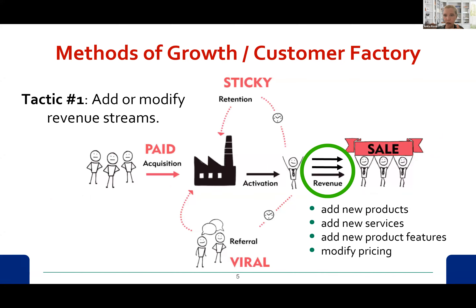We are going to be working on three different case studies, and they all have components of this customer factory. One component would be to add or modify revenue streams. It's really in the revenue section where revenue is coming into the company. After the customer has already found out about your value proposition, what can we do? We can maybe add a new product or service, add new features, or modify pricing.